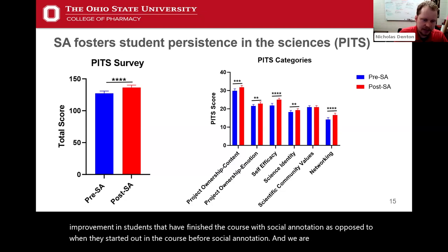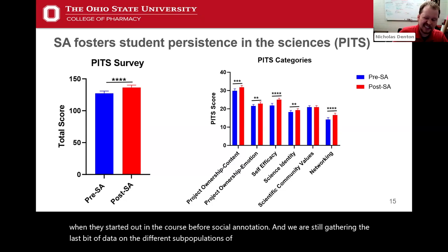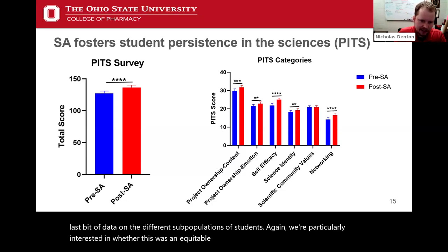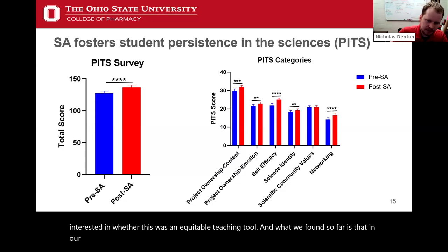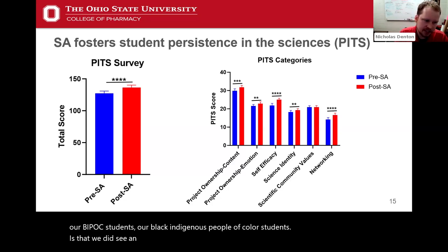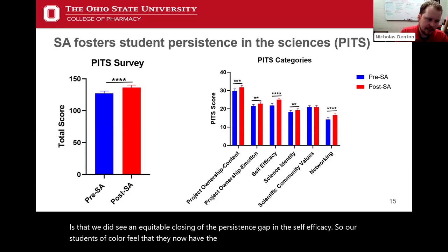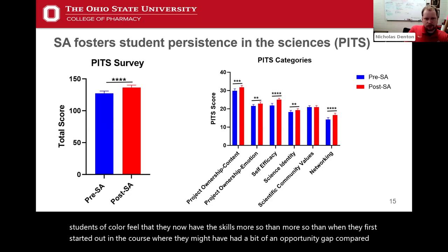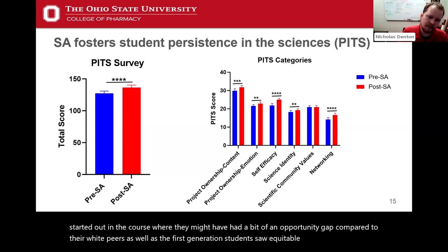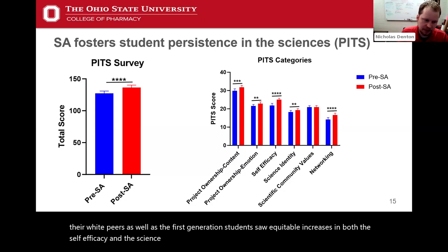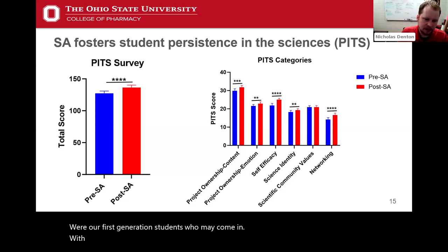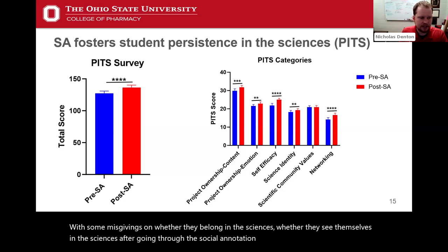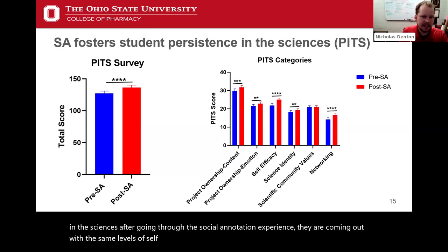We are still gathering data on different subpopulations. We're particularly interested in whether this is an equitable teaching tool. What we found so far is that our BIPOC students — Black, Indigenous, and People of Color — saw an equitable closing of the persistence gap in self-efficacy: students of color feel they now have the skills more so than when they first started, where they may have had an opportunity gap compared to their white peers. First-generation students saw equitable increases in both self-efficacy and science identity — first-gen students who may come in with misgivings about whether they belong in the sciences are coming out with the same levels of self-efficacy and science identity as their continuing-generation peers after going through the social annotation experience.